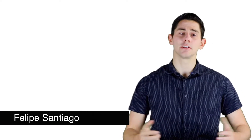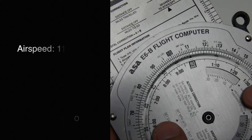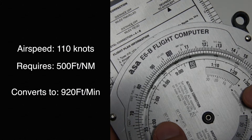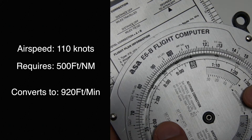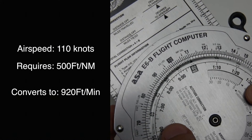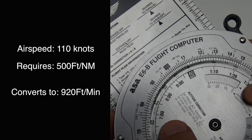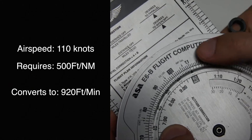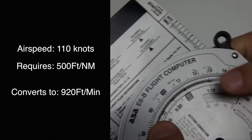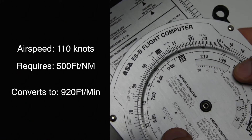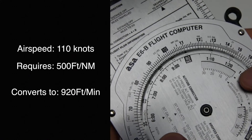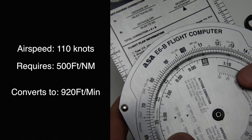Welcome back aviators, let's take a look at our E6B. To convert feet per nautical mile to feet per minute, we must start with our speed. We're doing a hundred and ten knots per hour, and we need for this climb gradient 500 feet per nautical mile.